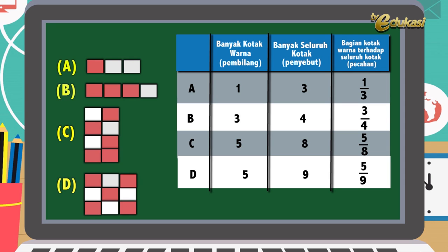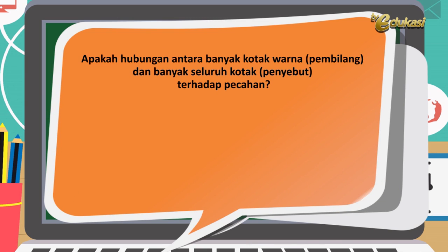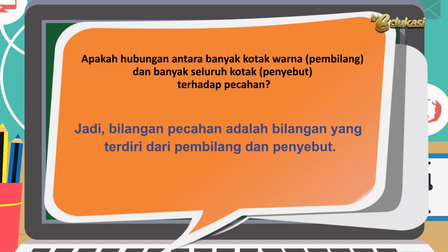Yang D: banyaknya kotak warna 5, banyak seluruh kotak 9. Jadi banyak kotak warna terhadap seluruh kotak, 5 per 9. Kotak warna kita anggap pembilang, banyaknya seluruh kotak kita anggap penyebut. Perhatikan anak-anak, jadi hubungan antara banyak kotak warna dan banyak seluruh kotak terhadap pecahan itu adalah pembilang dibagi penyebut. Jadi pecahan adalah perbandingan pembilang terhadap penyebut. Jelas ya? Jadi kalau pecahan itu atasnya dinamakan pembilang, bawahnya dinamakan penyebut.